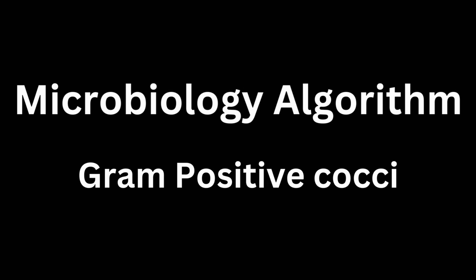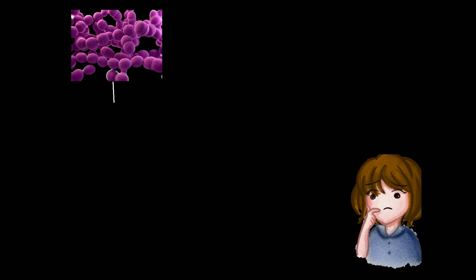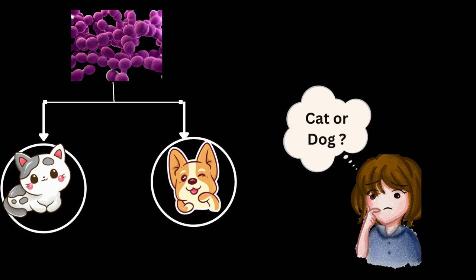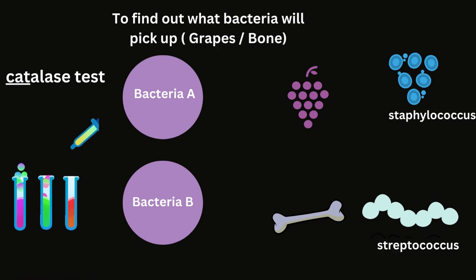Hello everybody. In this video I'll be discussing a trick to memorize the microbiology algorithm for gram-positive cocci bacteria. When we know that we have a gram-positive cocci bacteria to deal with, we'll associate them with newborn kittens and puppies, because cocci bacteria are spherical in shape and newborn kittens and puppies cocoon up in a spherical shape after their birth. We'll perform a test to classify whether they are cats or dogs, called the catalase test.